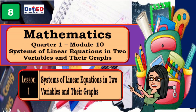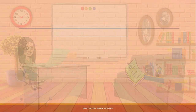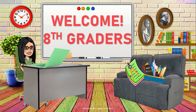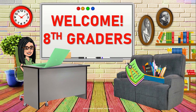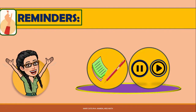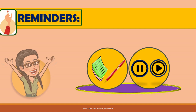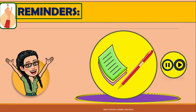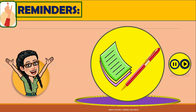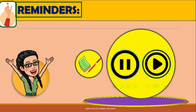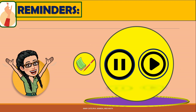This video is about systems of linear equations in two variables and their graphs for 8th graders. Welcome to your virtual classroom! Just a few reminders for your convenience. Get a sheet of paper and a pen to answer the exercises. To make sure you comprehend and follow through the concepts in the video, pause and replay the video at any time.